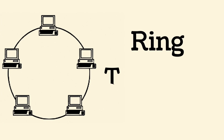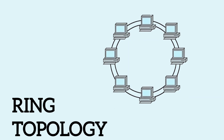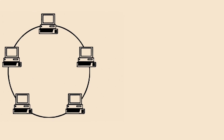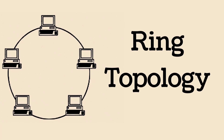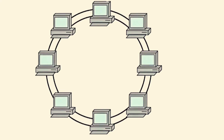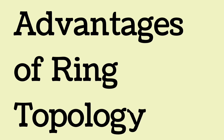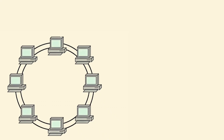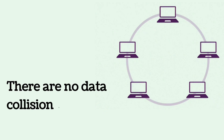Ring topology: device connections create a circular path where each computer is connected to others in the shape of a closed loop. Each device is connected to two others, making a circle for data to travel around. Advantages: data transmission speed is very high, the network works smoothly because data moves only in one direction, and there are no data collisions, making the network more efficient.